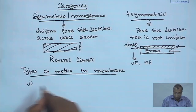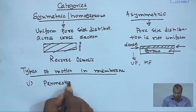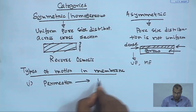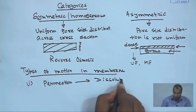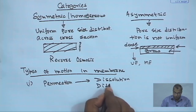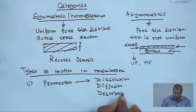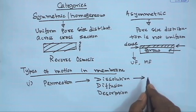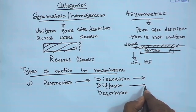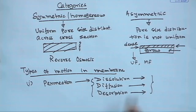The first type of transport mechanism is permeation. Permeation is a process involving three steps: dissolution, diffusion, and desorption. First the solute dissolves into the polymer matrix, then because of the concentration gradient it diffuses from the retentate or feed stream into the permeate stream, and then it is dissolved in the permeate stream. These three mechanisms together are called permeation.